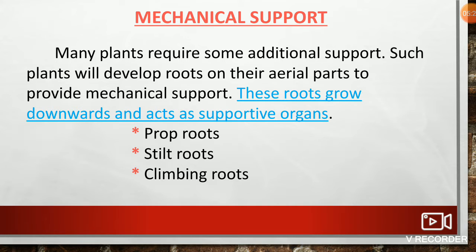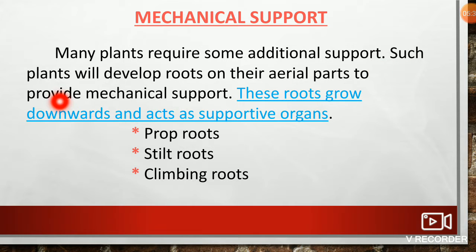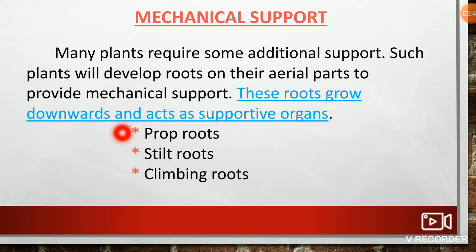Mechanical support: As the banyan tree is large and huge, it needs some support not to tilt and fall down. Many plants require additional support, so they develop roots on their aerial parts. These roots grow downwards and act as supportive organs. The mechanical supporting roots are of three types.